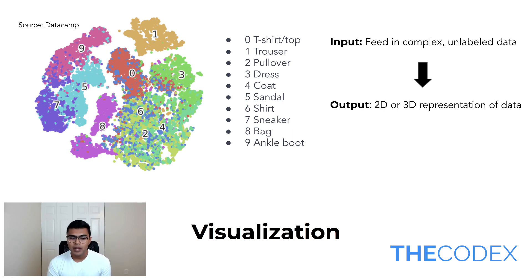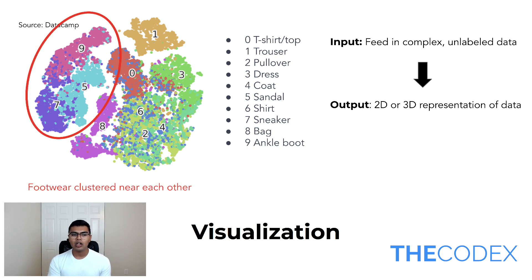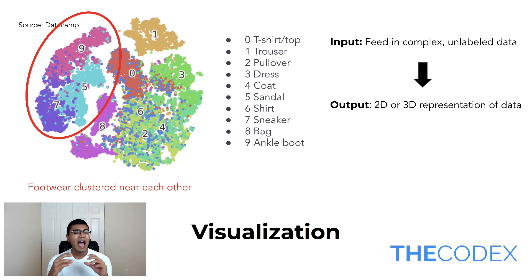Another example of unsupervised learning is visualization. A visualization algorithm takes as input a feed of complex unlabeled data. So imagine you passed in images of t-shirts, trousers, dresses, coats, and sandals, each with a number associated with it. Your output is going to be a 2D or 3D representation of the data, where you have to look at it and figure out patterns and find your own clusters of what looks similar. So 9, 5, and 7 are closely associated — 9 is ankle boot, 5 is sandal, 7 is sneaker. The footwear is clustered near each other because they share similar characteristics. Trousers by itself is very unique, while 2 and 4 — pullover and coat — are very similar. That's how you can use a visualization algorithm to better understand your data and find patterns someone may not have seen before.